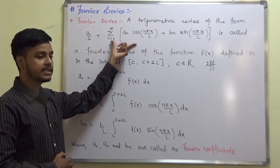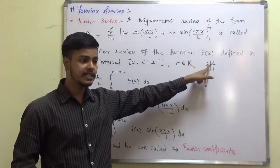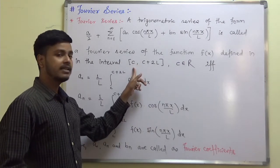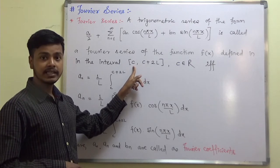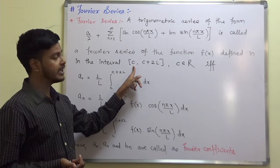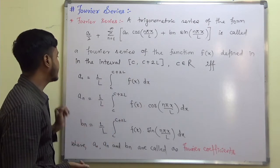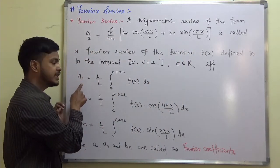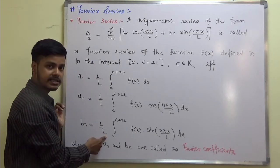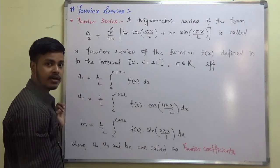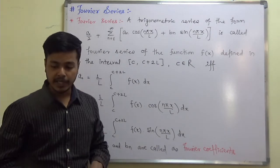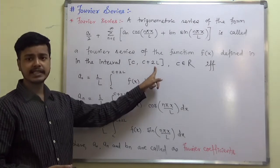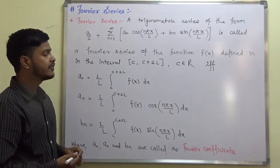So, a trigonometric series of the given form is a Fourier series for the function f(x) defined in the interval c to c+2L, where c can be any real number. We say it is a Fourier series for f(x) if and only if a₀, aₙ, and bₙ take those values. All these a₀, aₙ, and bₙ are Fourier coefficients. Depending on the values of c and L, we have different cases.